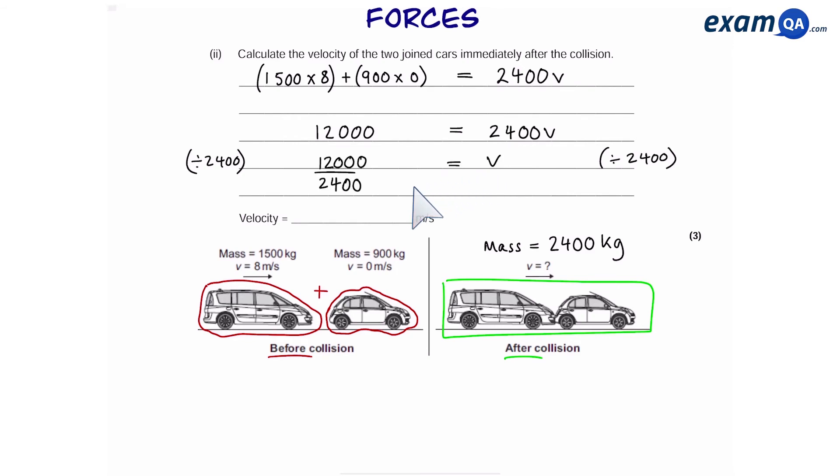So 12,000 divided by 2400 gives us a final answer of 5 meters per second. So the two cars, which are joined together after the collision, are still moving forward, but they're moving at 5 meters per second.